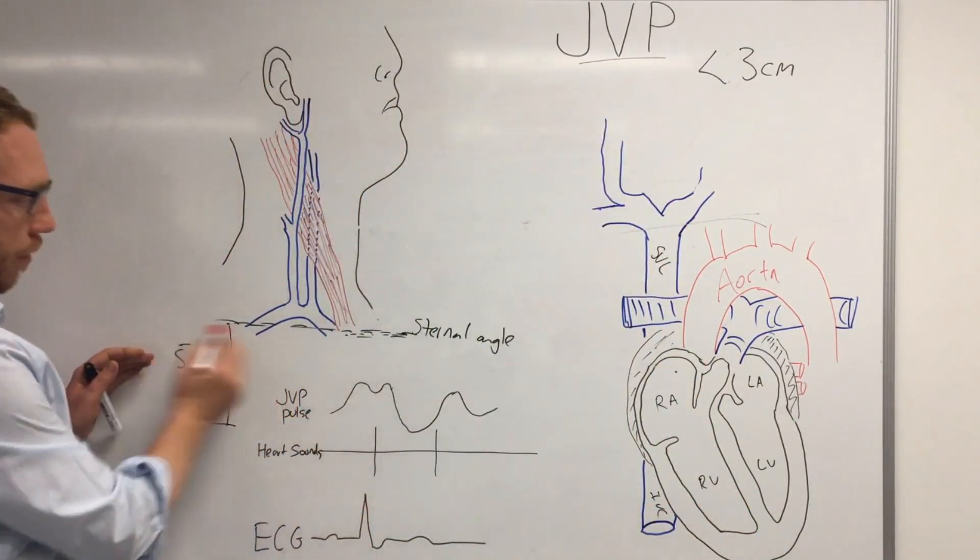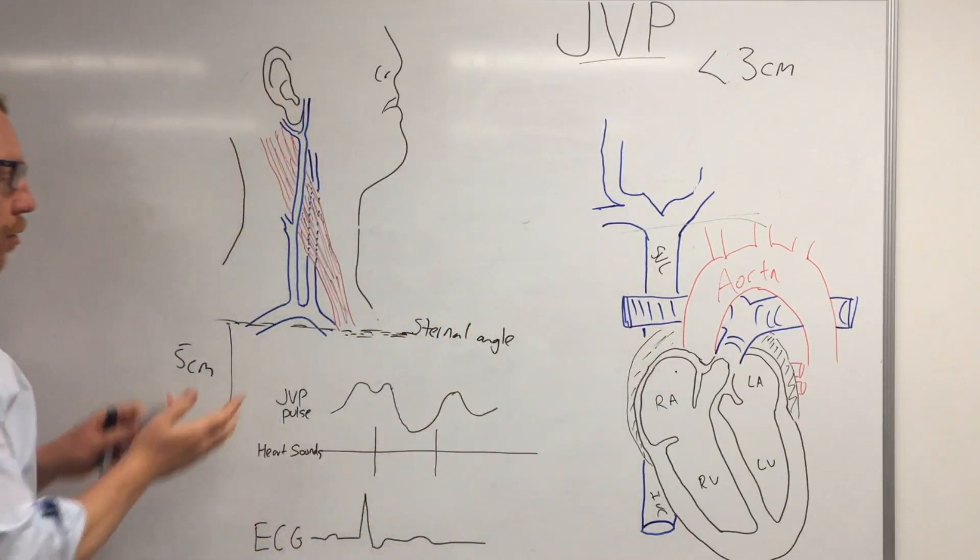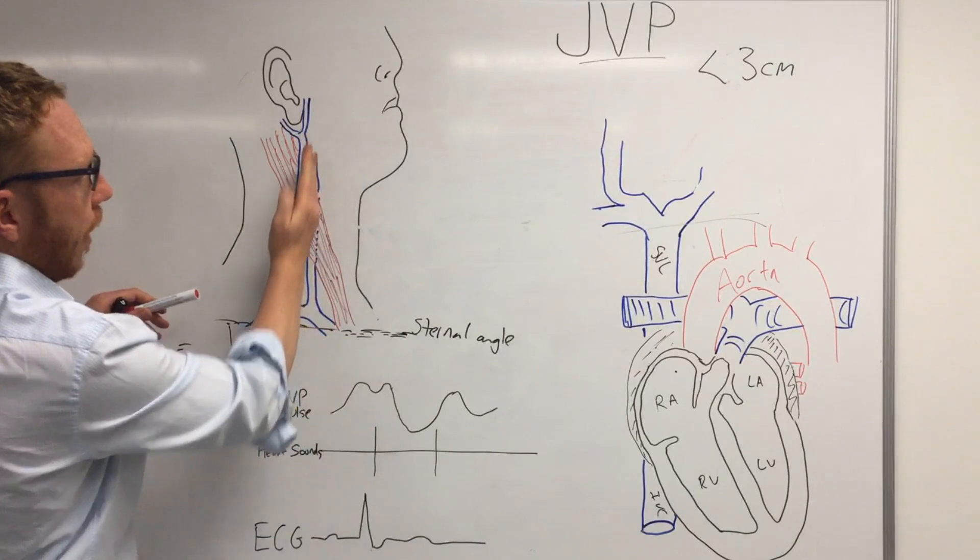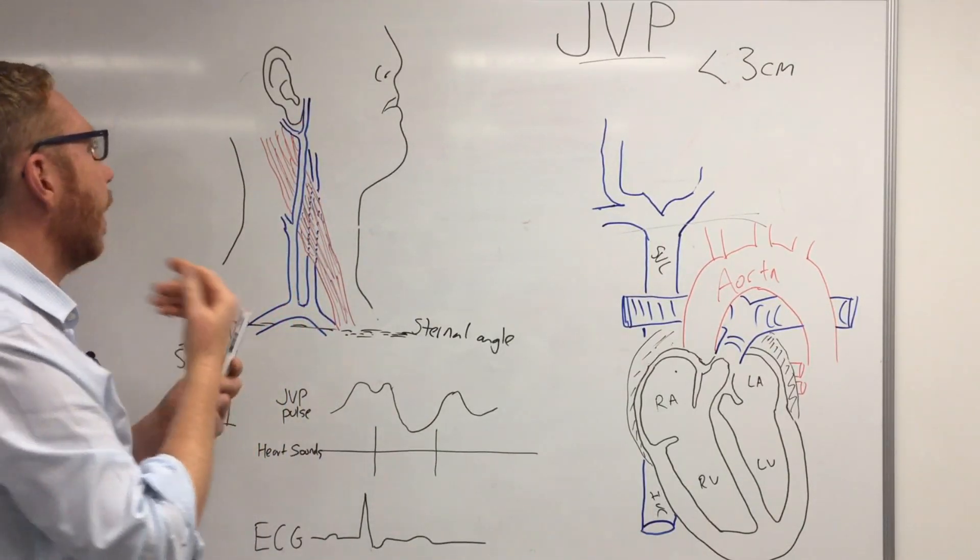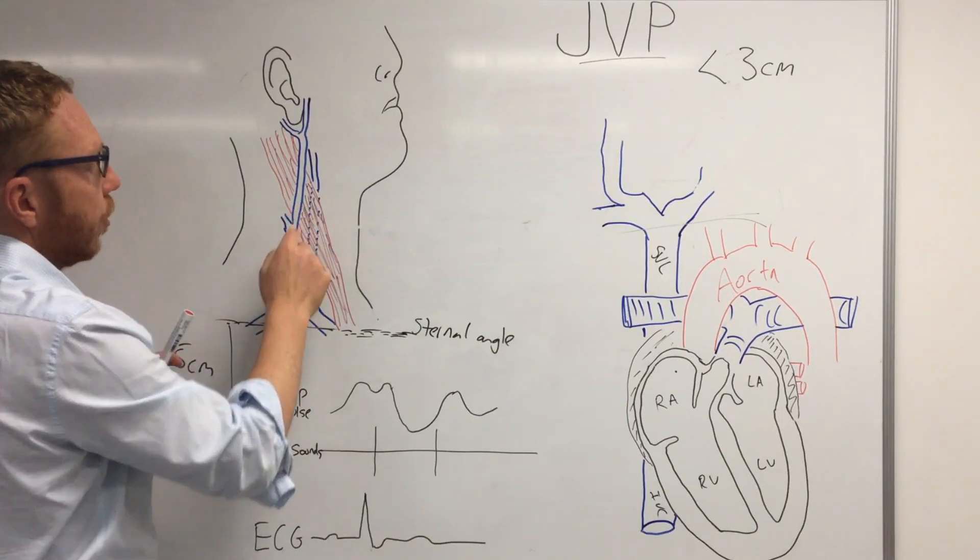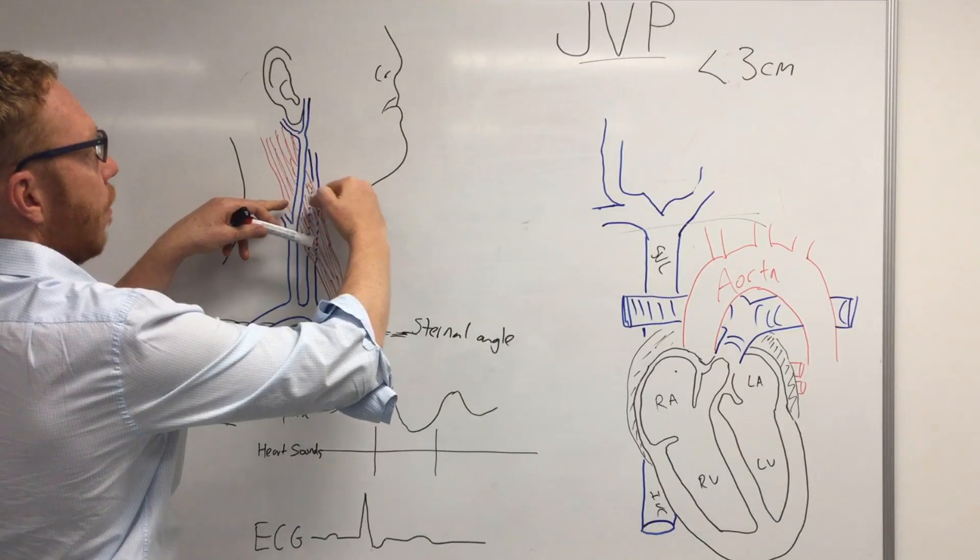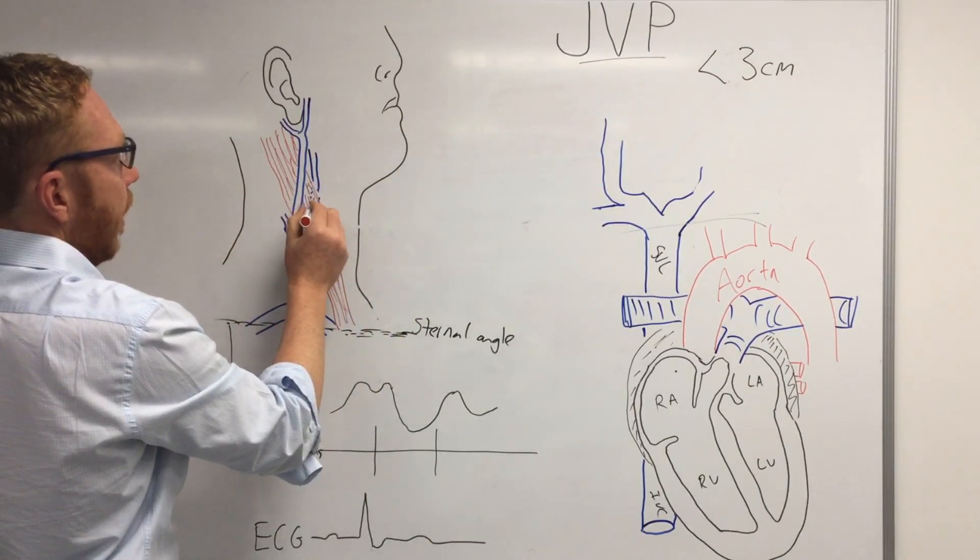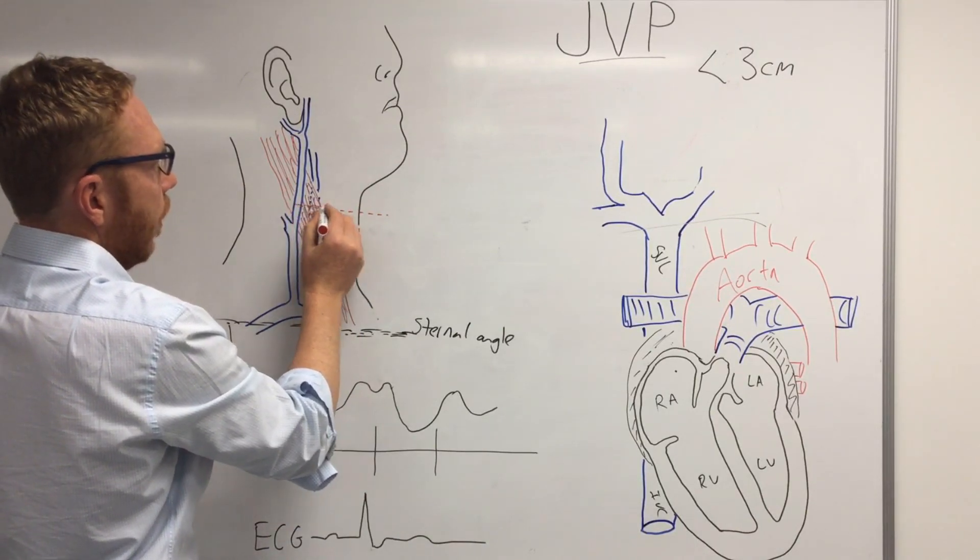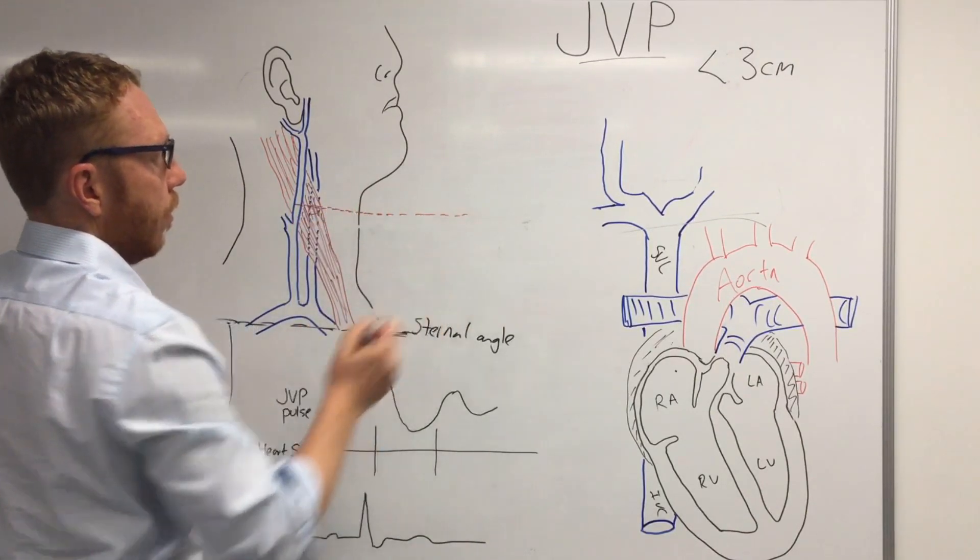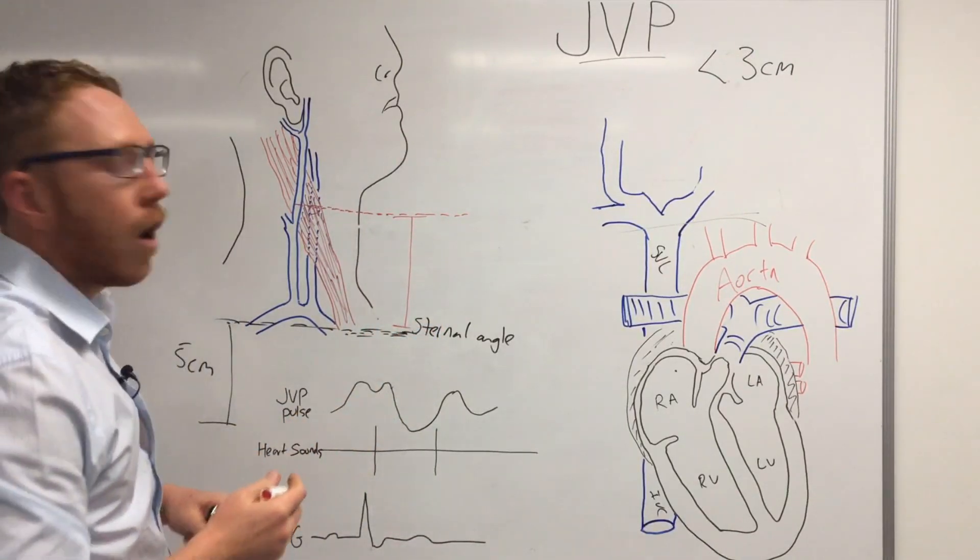Now going off from the sternal angle which we said is five centimeters above the right atria, when you look at the internal jugular on the right side, having their head tilted away, if you see pulsations what you will then do is get a ruler and come off from that point of measurement. So let's say that's where your ruler, that's where you find the pulsation at the highest point, that's where your ruler comes off and then you measure down to the sternal angle and that will give you the height.